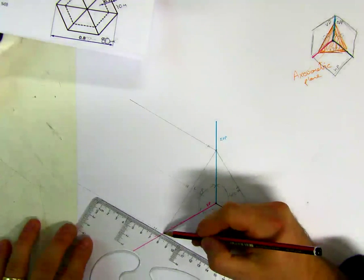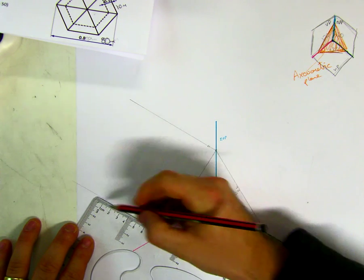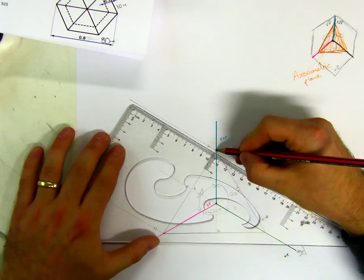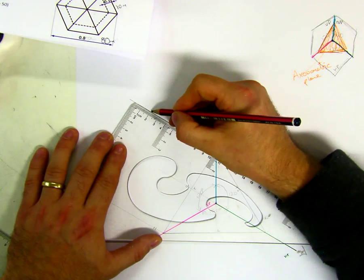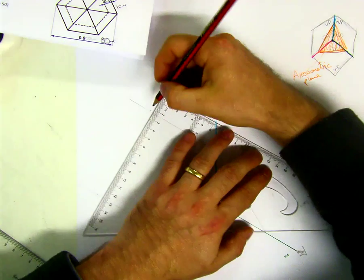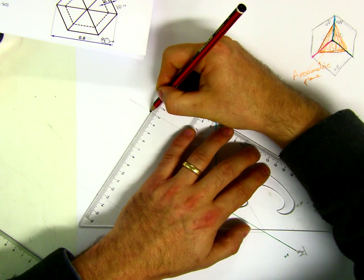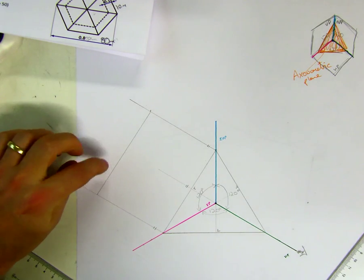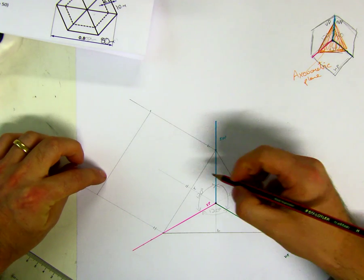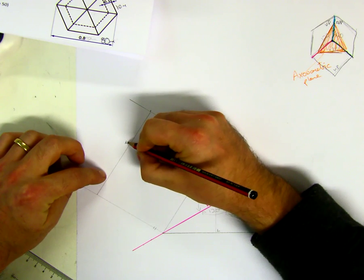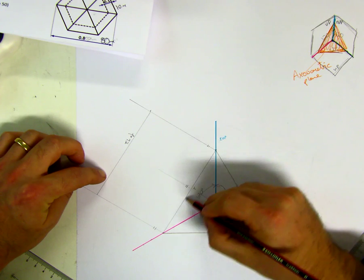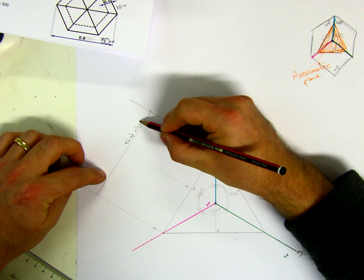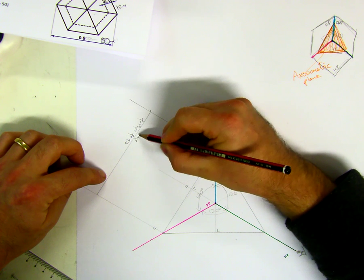We'll roughly measure out 80 — measure out 80 on one side, and measure out 80 on the other side. Whatever you measure out on one side, you have to measure out on the other. Draw that line. This line here is representing the true length — TL — the true length of this edge, the true length of the edge of the axonometric plane.